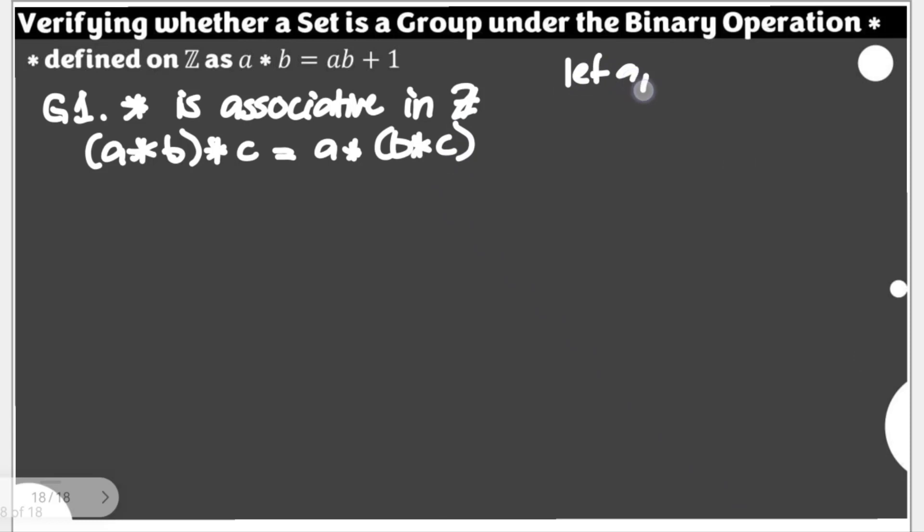Where A, B, and C are elements of our integers, that's Z. So if we could show it, then we proceed to G2, and then we proceed to G3 if possible. So first, let's proceed with the left-hand side, A star B, star C.